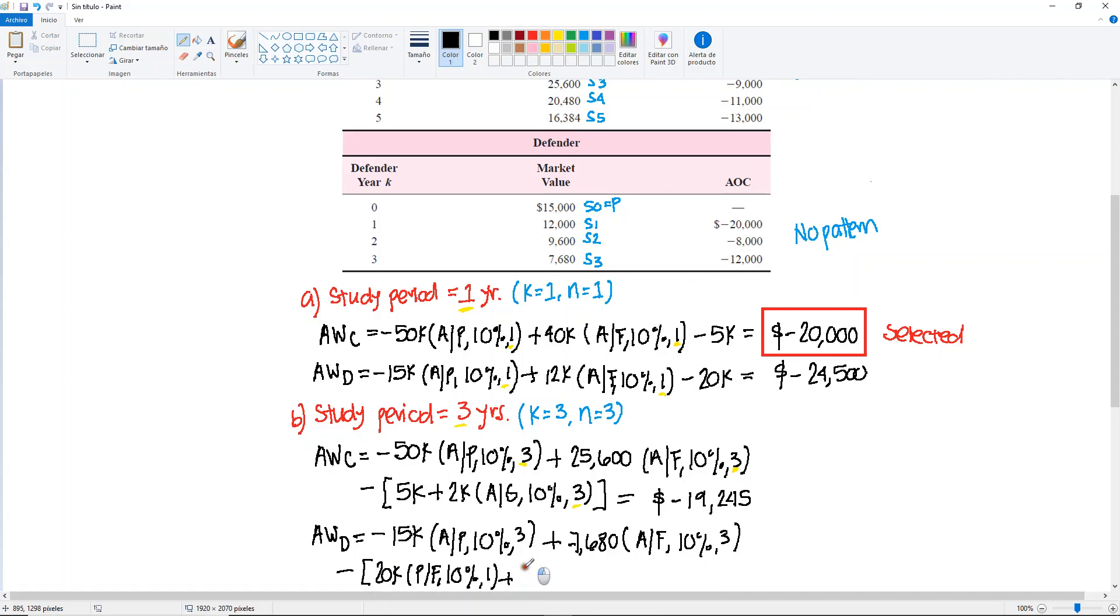8,000. Find P given F, 10%. This is two years away. And then the last one, 12,000. Find P given F, 10%. And this is three years away.